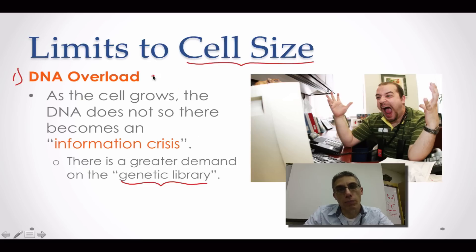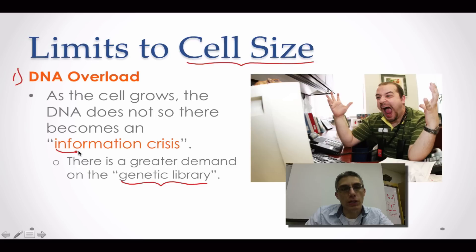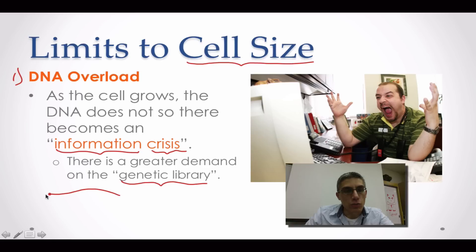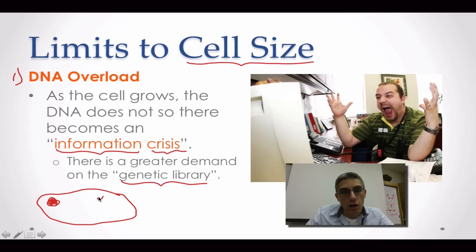The DNA basically tells the different parts of the cell what to do. So as the cell grows, the DNA does not, and what happens is we end up with something called an information crisis. If you have a cell that has gotten to a certain size, you might have the nucleus way over on the left-hand side, and all of these cell parts scattered throughout have a really hard time getting the information they need.